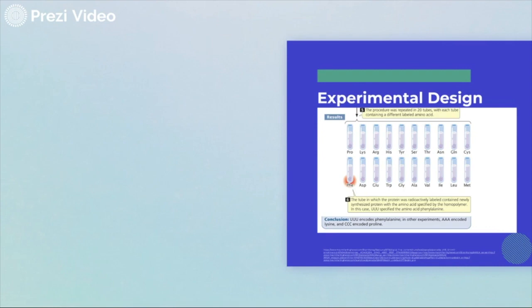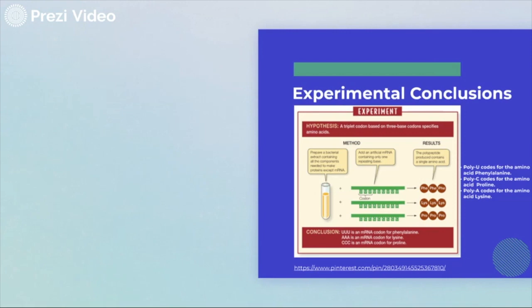Here's an image showing the 20 test tubes. In each trial, they tested either poly-U, poly-A, poly-C, or poly-G.